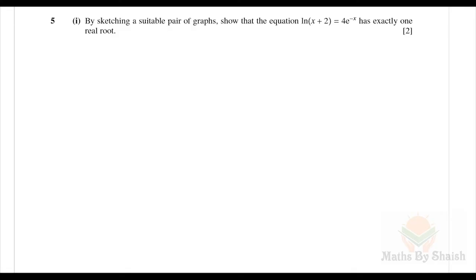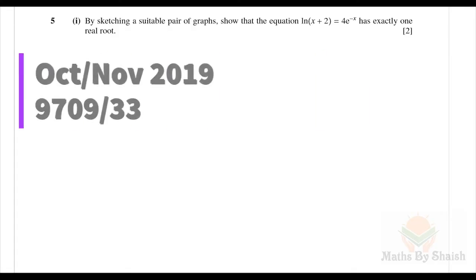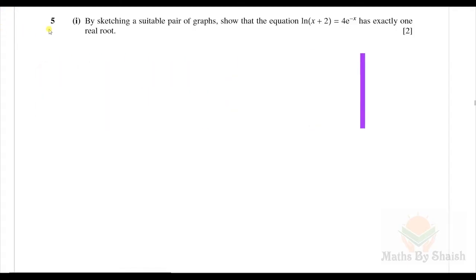Hello and welcome back to another video. In this video we are going to discuss the next few questions of the October November 2019 paper 9709/33, questions 5, 6, and 7. Here's question number 5: by sketching a suitable pair of graphs, show that the equation ln(x+2) = 4e^(-x) has exactly one real root.